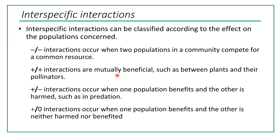Interactions can be plus-plus, meaning they are mutually beneficial. An example would be the interaction between plants and their pollinators. Plus-minus interactions occur when one population benefits and the other is harmed, such as in predation — the predator benefits and the prey is harmed. Plus-zero interactions occur when one population benefits and the other is neither harmed nor benefited.